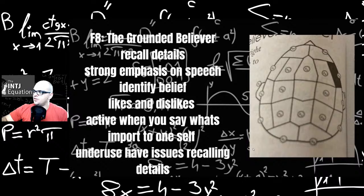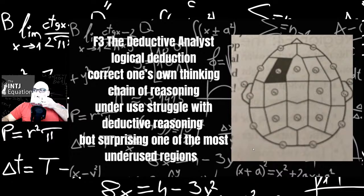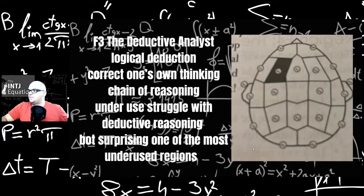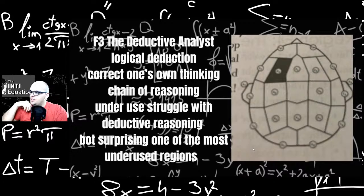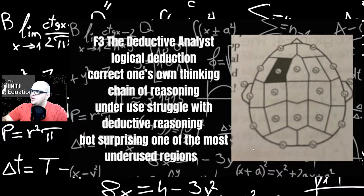F8, the grounded believer: recalls details, strong emphasis on speech, identify beliefs, likes and dislikes. Imagine when you say what's important to one's self. Underused issues recalling details. This definitely sounds like what Fi users would use. The deductive analyst, F3: logical deduction, correct one's own thinking, chain of reasoning. Underused struggle with deductive reasoning. Not surprising, one of the most underused regions. Probably something a high Ti user here uses this section a lot.